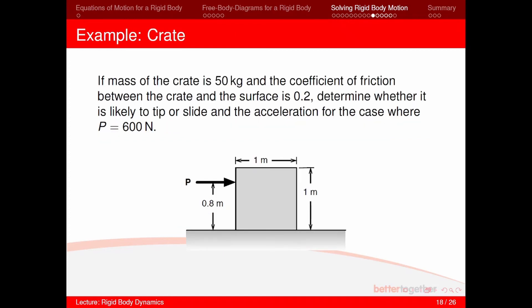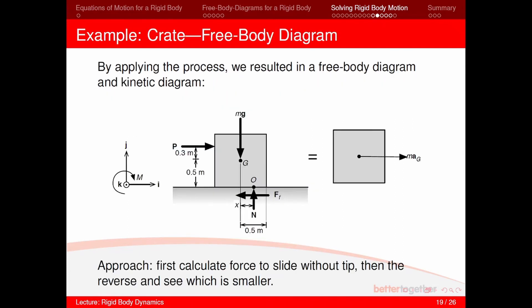Let's do another example. The mass of the crate shown here is 50 kilograms and the coefficient of friction between the crate and the surface is 0.2. Determine whether it is likely to tip or slide when force P is applied, and find the acceleration if P equals 600 Newtons. The first step is to draw the free body diagram of this crate. We've indicated all the known forces, and the normal force is acting at an arbitrary point O, which is a distance x from the center of gravity. We don't know the value of x, as this will ultimately determine whether the block tips over or slides.